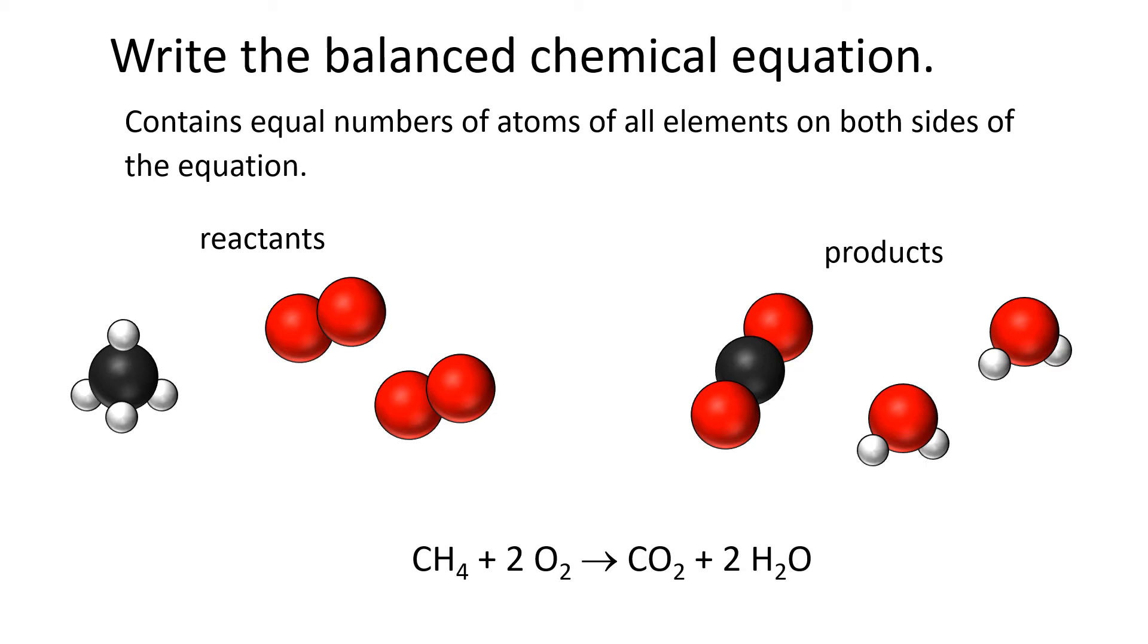So in this particular case, we have a molecule of methane, which is the CH4. It's the black sphere with the four white ones around it, and two oxygens. Each oxygen is diatomic, and then when these atoms react, they produce one carbon dioxide and two waters.